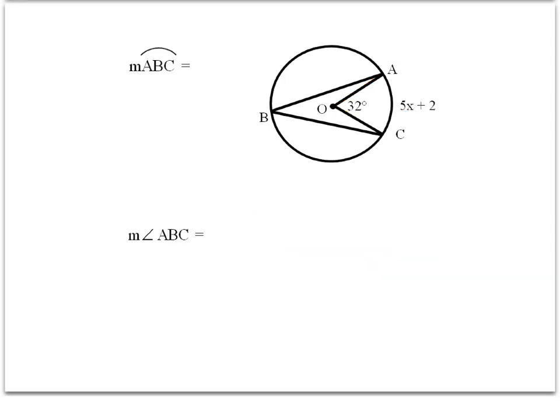The last two values we can base on the information that we just got. We know that the measure of arc AC is 32 degrees. Remember when we have a major arc, we're going to use the three letters.